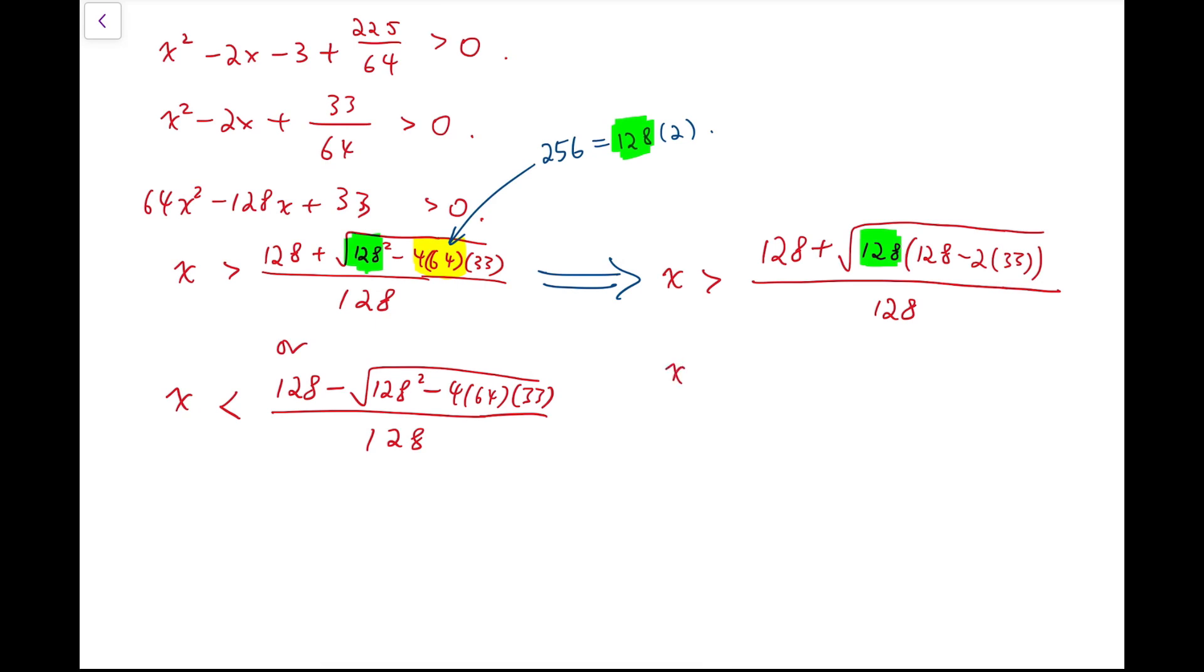So after that, x is greater than 128 plus the square roots of 128 times this number inside the bracket, labeled in yellow, is actually 62. So I'm going to further simplify that. The number inside the square root to be 256 times 31. The reason that I do this is that I can take out this number 256, because it's a perfect square, so the square root can be simplified, to become 128 plus 16 times root 31 over 128. So actually, after simplifying, this inequality is x larger than 8 plus root 31 over 8.